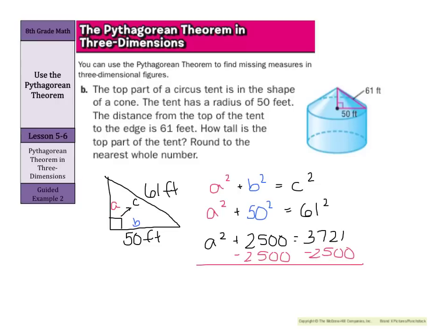So that this cancels out and we're left with A squared equals 1,221. And as we go to take the square root of both sides, A is going to equal plus or minus, technically, 34 and 9 tenths and some extra in your calculator feet. But of course, since we're just dealing here with the distance, it's going to stay positive. So our answer here is 35, since we're rounding to the nearest whole number, feet.